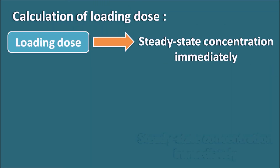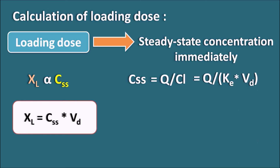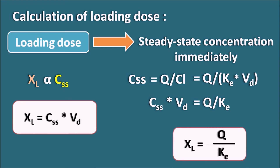The loading dose is given to achieve the steady state concentration immediately. The loading dose XL is directly proportional to the desired steady state concentration. So XL = CSS × Vd — multiplying concentration by volume gives the dose. We also know CSS = Q / CL = Q / (Ke × Vd). Rearranging: CSS × Vd = Q / Ke. Therefore the loading dose XL = CSS × Vd = Q / Ke. We can use either of these two equations to calculate the loading dose.